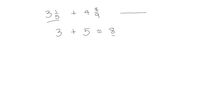Let's look at it on a number line. If we have 3, 4, and 5, we would see that 3 and 1 fifth would be a little bit more than 3, and 4 and 8 ninths would be a little bit less than 5. So if we look at the sum of 3 and 5, we see that that would be 8.